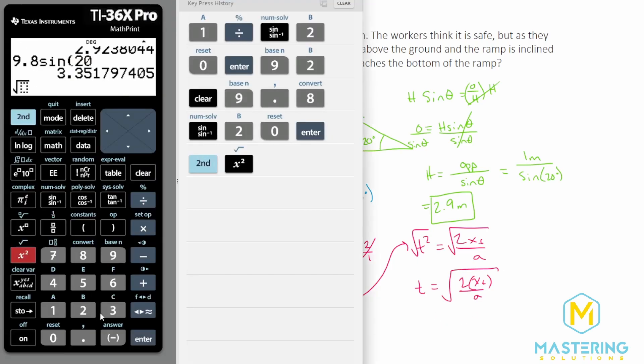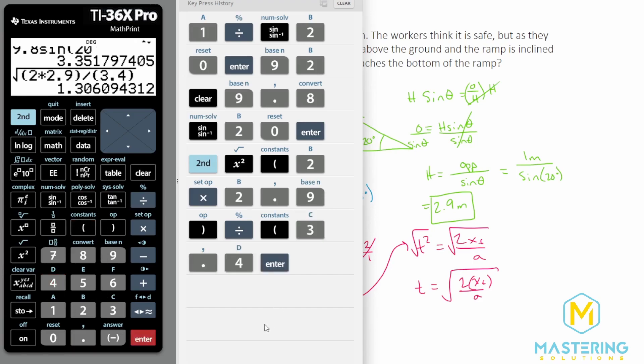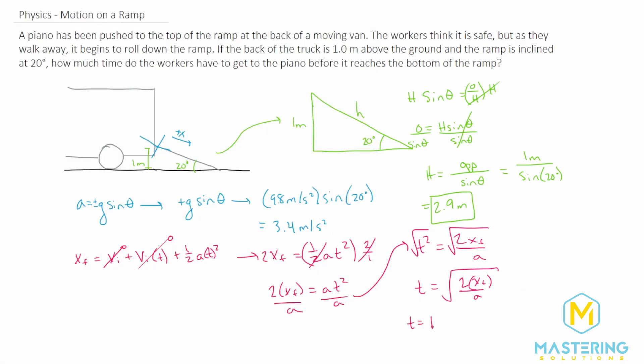Take the square root of 2 times our x, which we found was 2.9 meters, and then that'll be divided by the acceleration, which we found is 3.4 meters per second squared. So we have 1.3 seconds. So t equals 1.3 seconds before the piano reaches the bottom of the ramp.